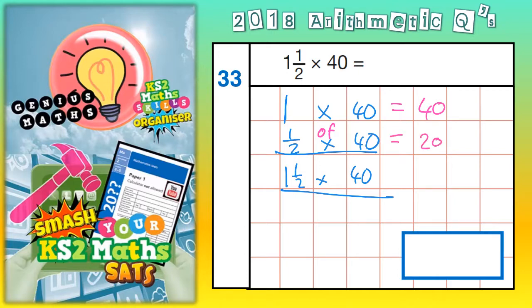So if 1 lot of 40 is 40 and ½ of 40 is 20, 1½ lots are... Remember, 1½ times 40 is another way of saying 1½ lots of 40. It's basically going to be 40 plus 20 added together, and 40 plus 20 added together is 60. So our final answer is 60.